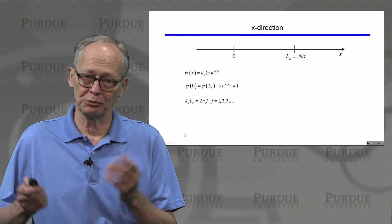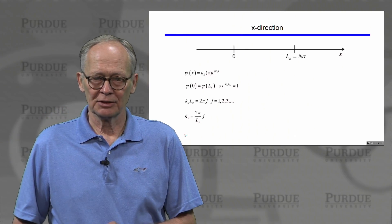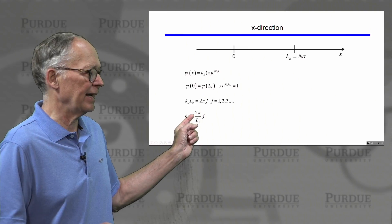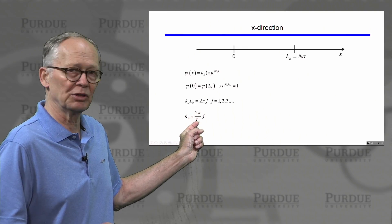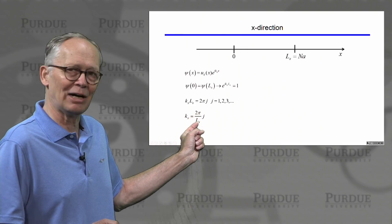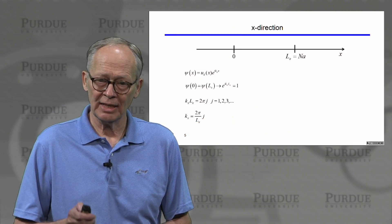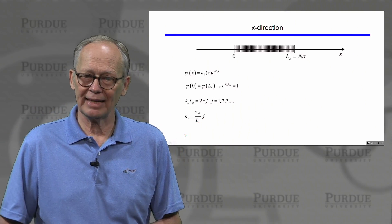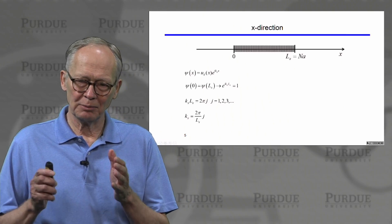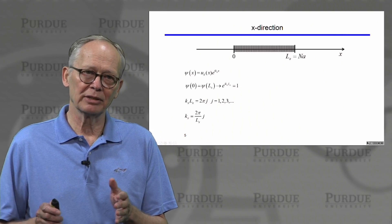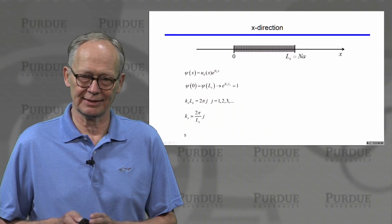Solving for kx, we see that kx equals 2π over the length Lx times this integer j. If we plot that, we get a set of discrete states. Whenever we apply boundary conditions to a wave function, we get a set of discrete k states. This is not a particle in a box problem — this is a very large volume with very finely spaced states.